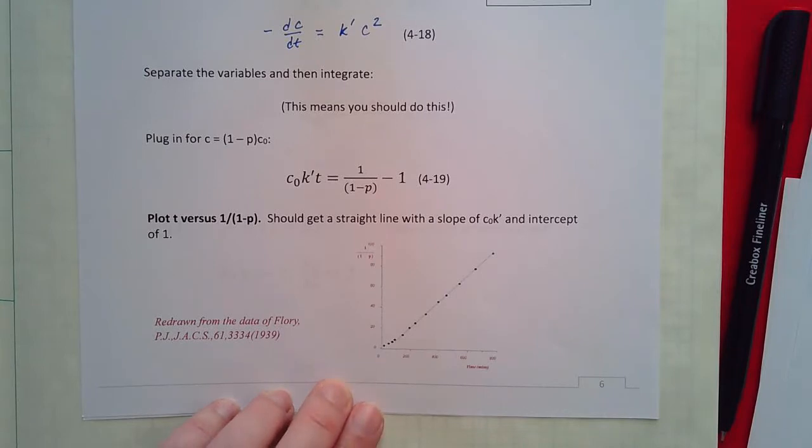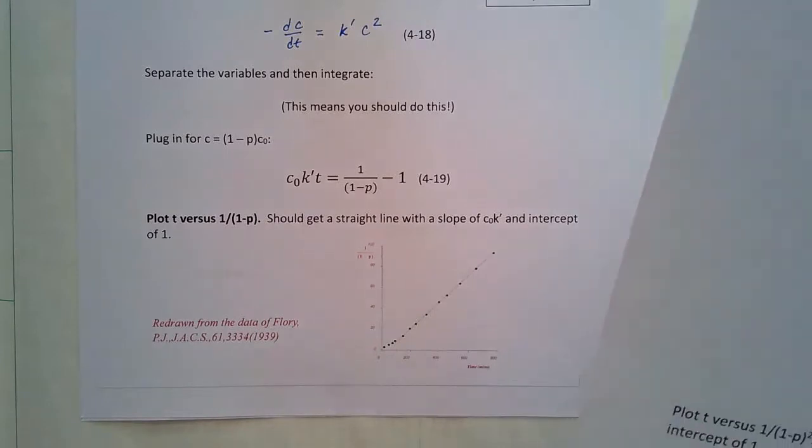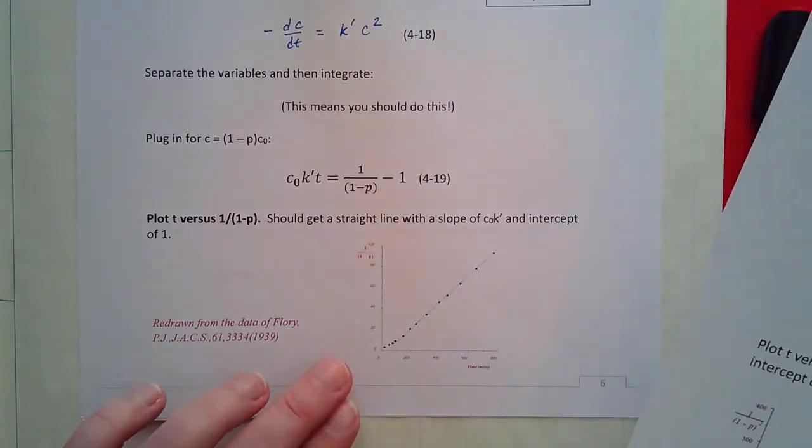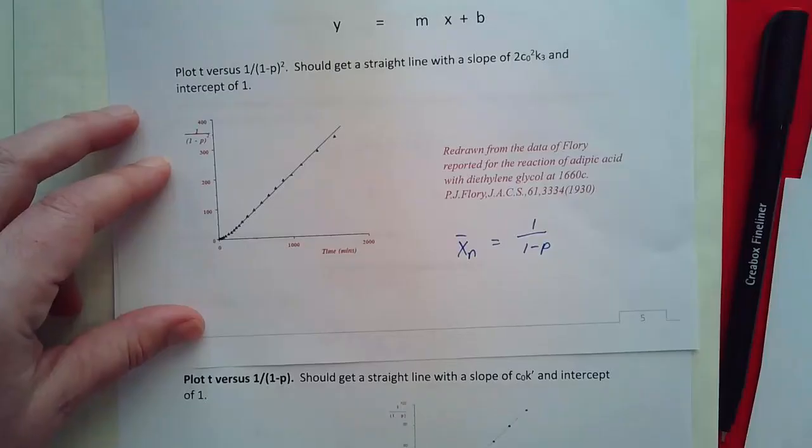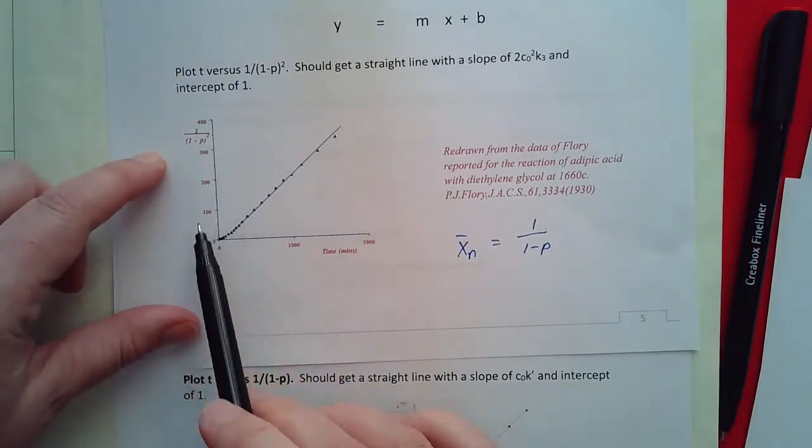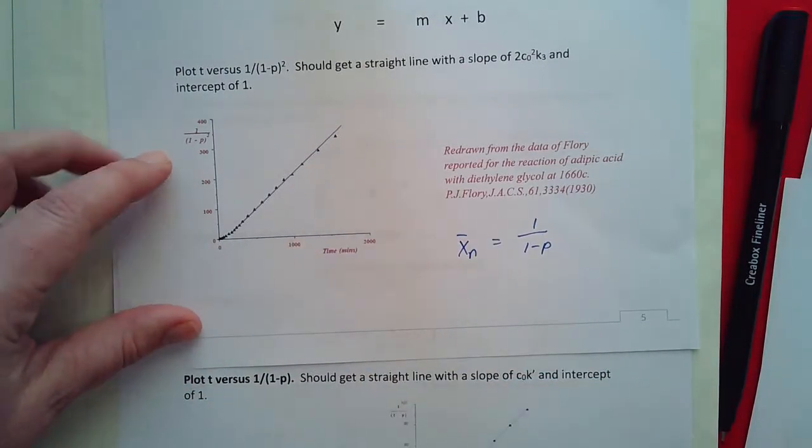So this is a plot of 1 over 1 minus p and that is for our catalyzed reaction and then just to remind you here's a plot of 1 over 1 minus p squared for the uncatalyzed reaction.